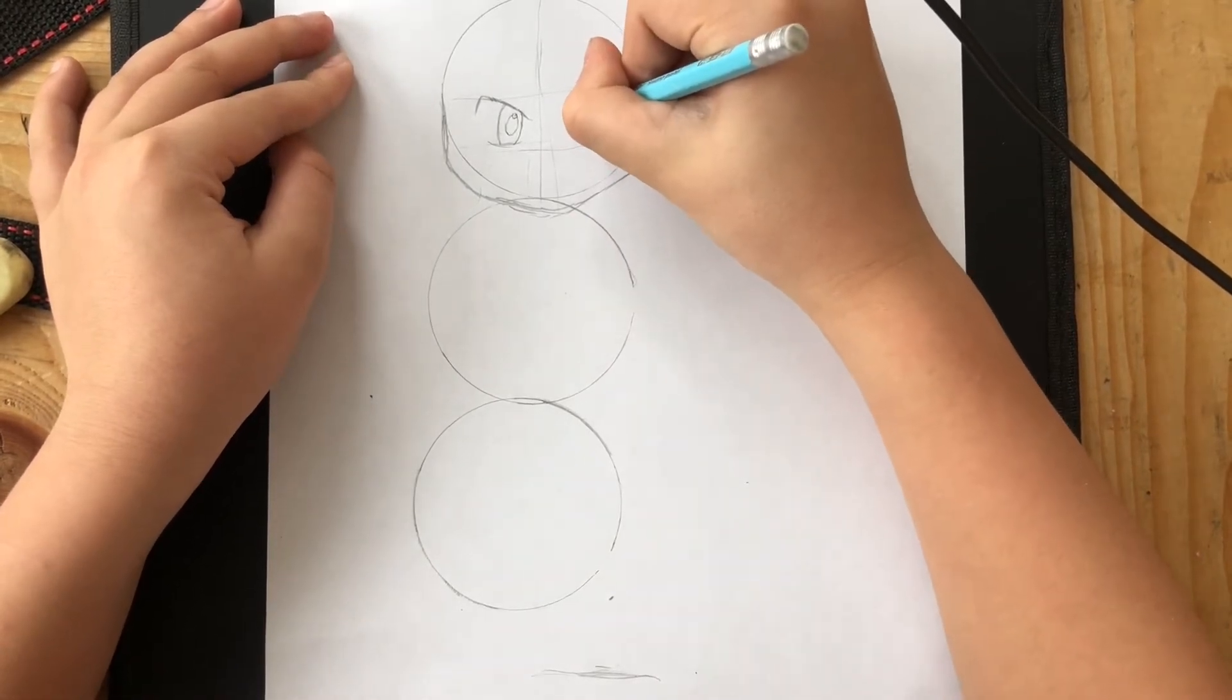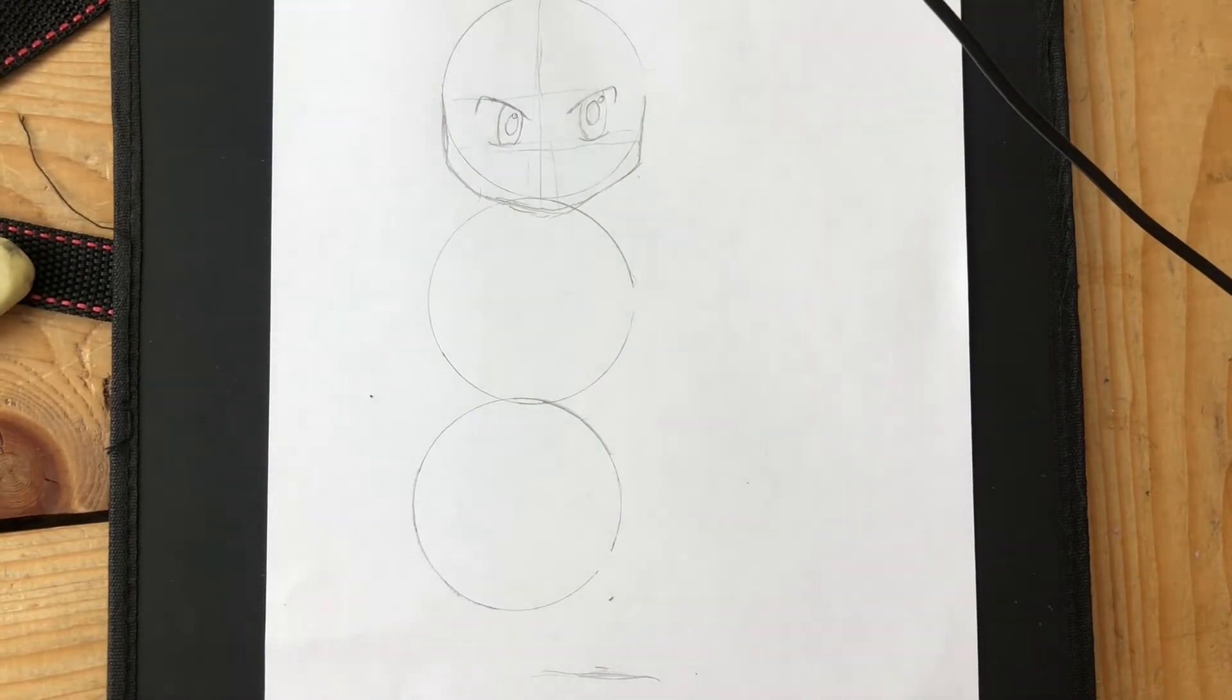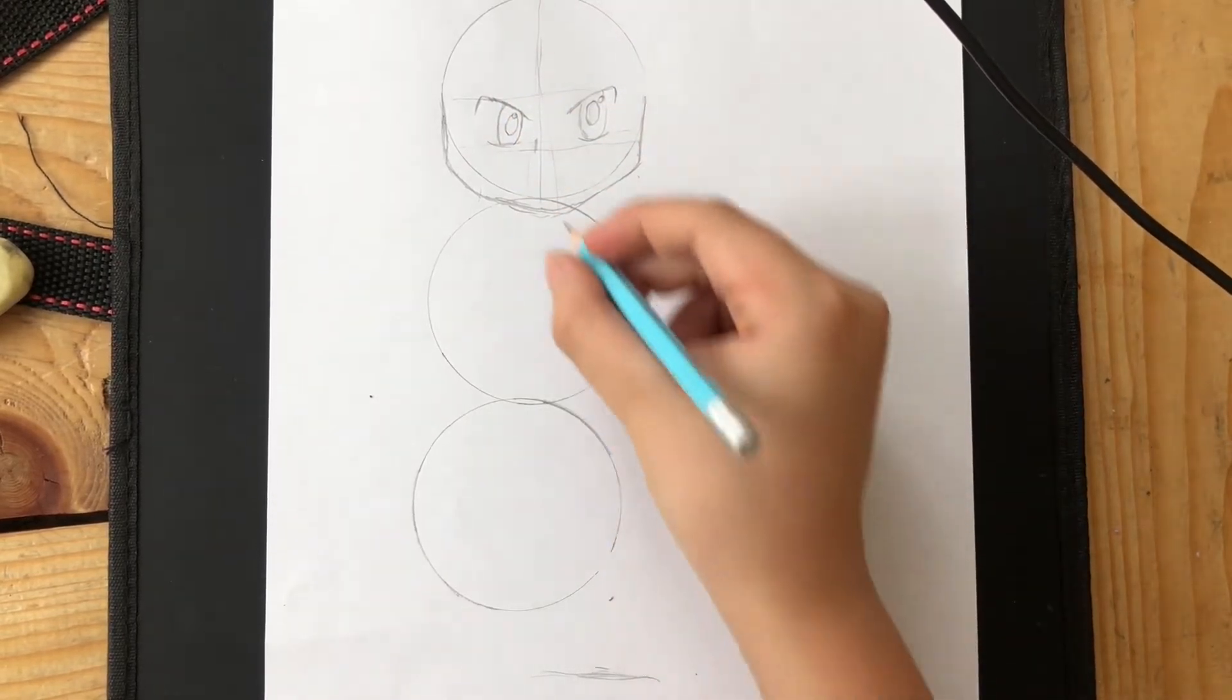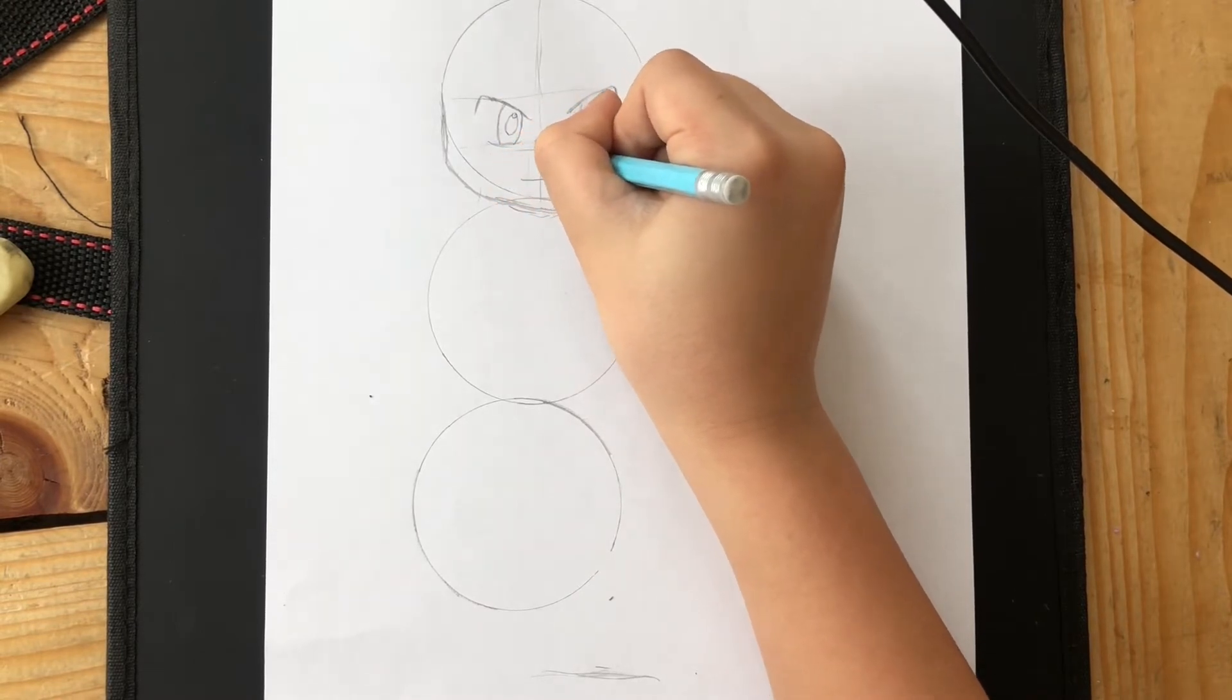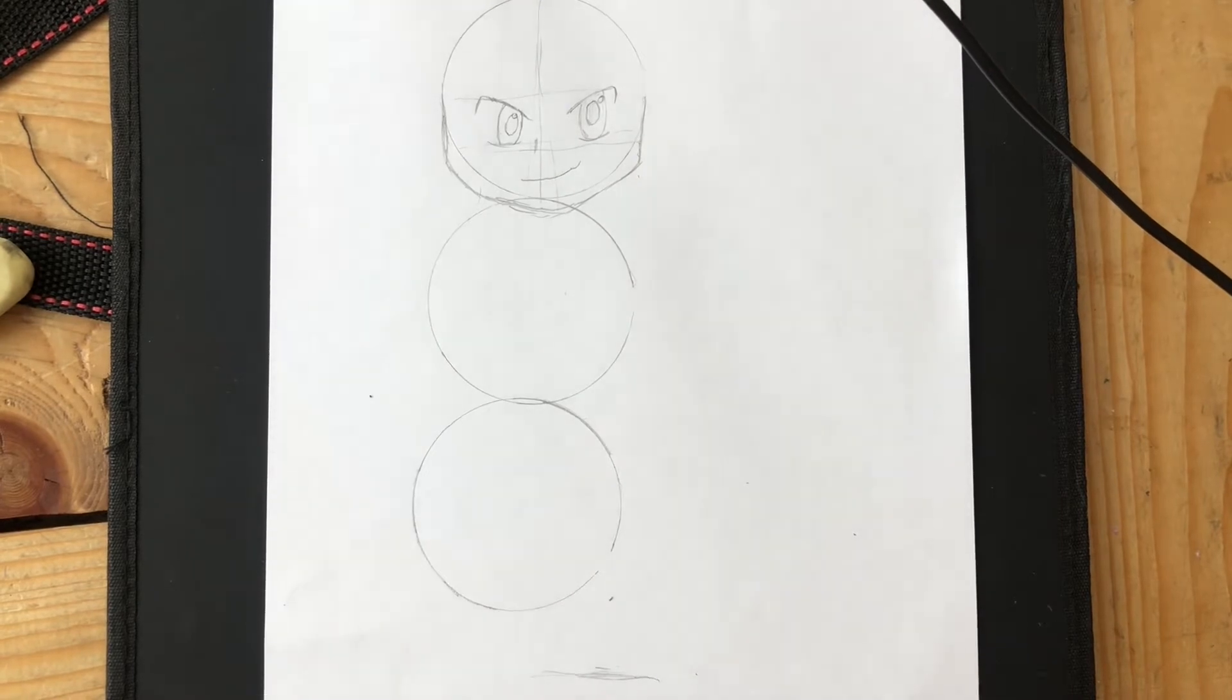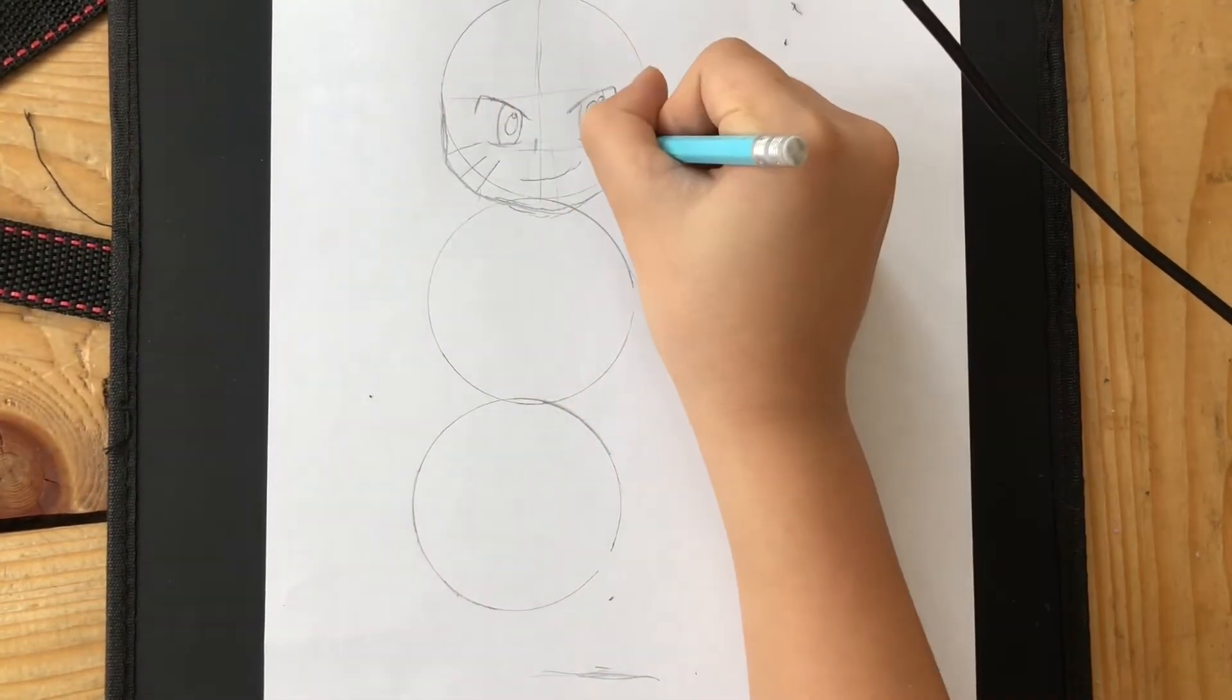It's normal that sometimes the big oval doesn't touch the small bubble. Then you can draw a line as a nose and you can draw the mouth, but sometimes chibi artists don't draw noses. Then I'm drawing the whiskers, but you don't have to draw them if you're not drawing Naruto.